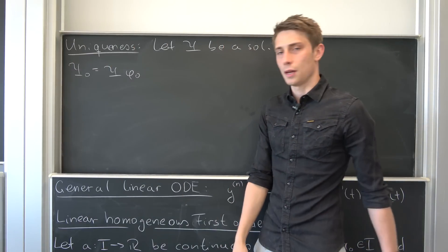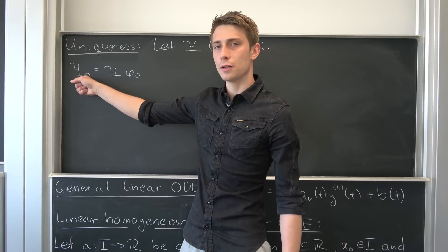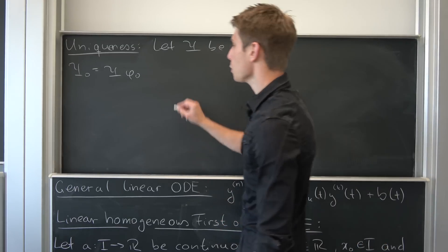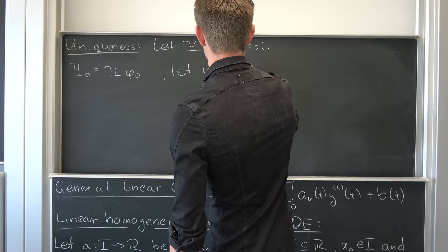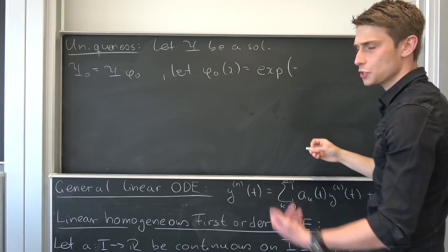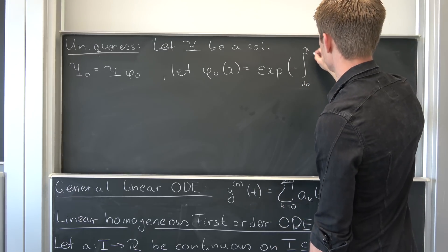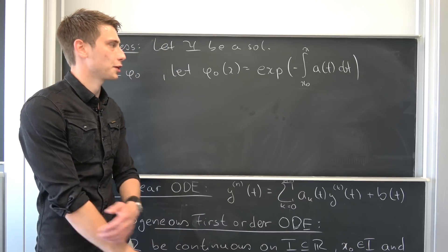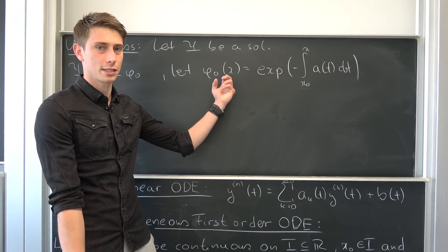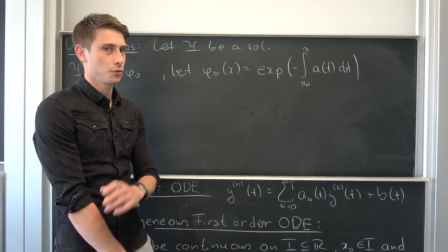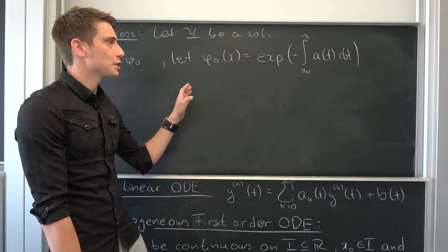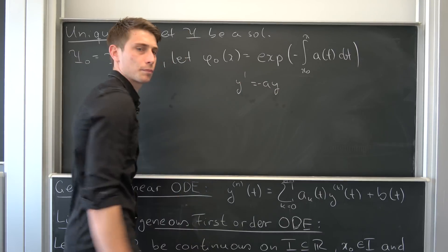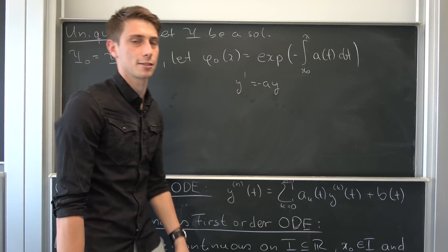We'll figure out what φ₀ is in a second. Let's define φ₀(x) to be the exponential function of the negative integral from x₀ to x of a(t) dt. We can do this — we are just defining it. Our goal is to show that this thing is invertible, as you'll see in a moment. Notice that φ₀ is a solution to the differential equation y' = −a·y. Plug it in and you'll see this is indeed true.